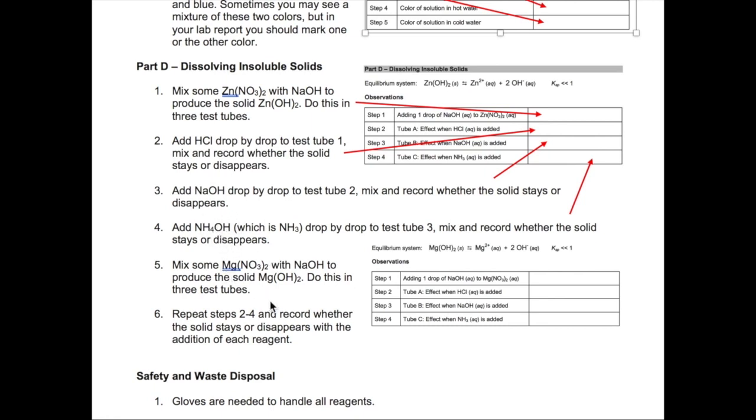Last experiment is to repeat what you just did with zinc hydroxide to another precipitate, this time magnesium hydroxide. Again, make three tubes of the precipitate as you did earlier and then observe what happens to each tube after addition of HCl, sodium hydroxide, and ammonia.